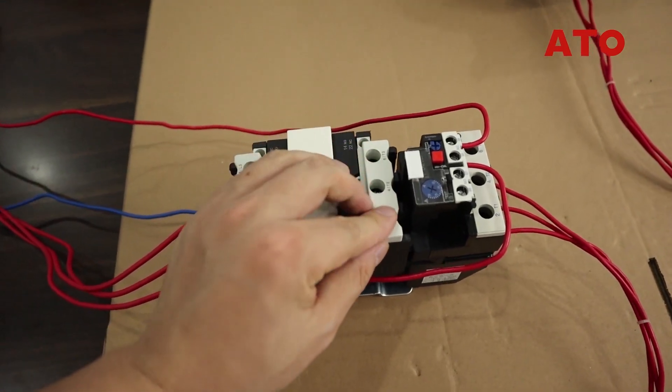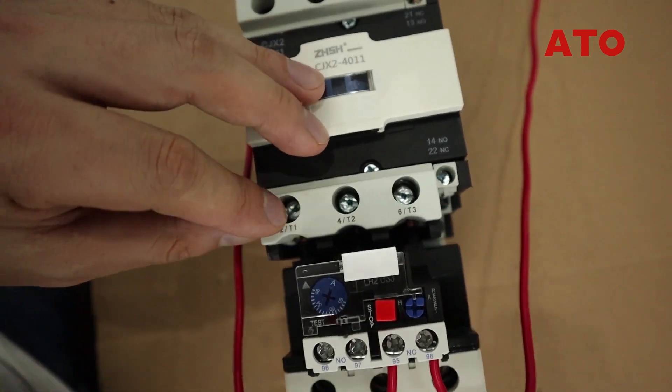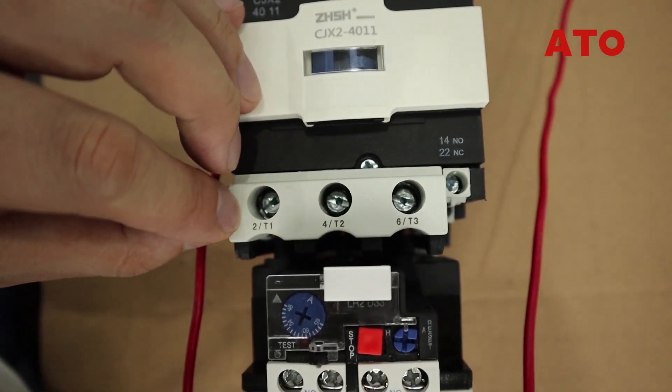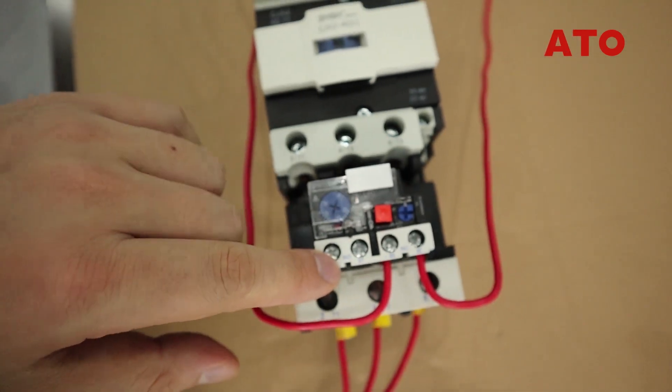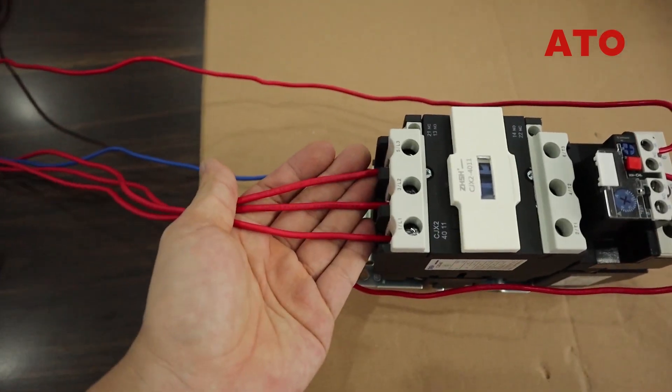Thermal overload relays generally work in tandem with contactors to control the operation of motors. The wiring is not complicated. What you need to do is connect the input terminals of the relay to the output terminals of the contactor.